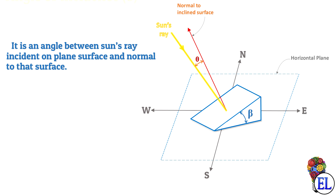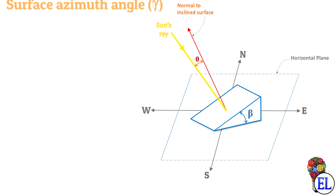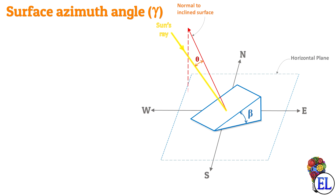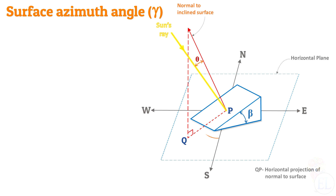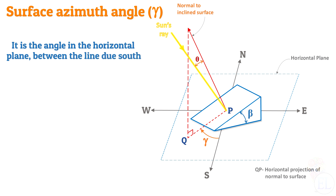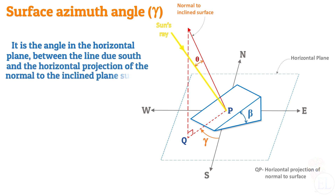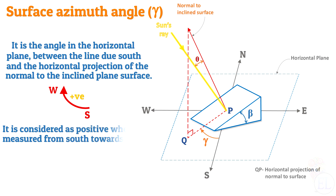Moving to surface azimuth angle: taking the projection of the normal to the inclined surface on the horizontal plane — let PQ be this projection. The angle measured from south to this projection is known as the surface azimuth angle, denoted by gamma. It is defined as the angle in the horizontal plane between the line due south and the horizontal projection of the normal to the inclined surface. Just like the solar azimuth angle, it is considered positive when measured from south towards the west.